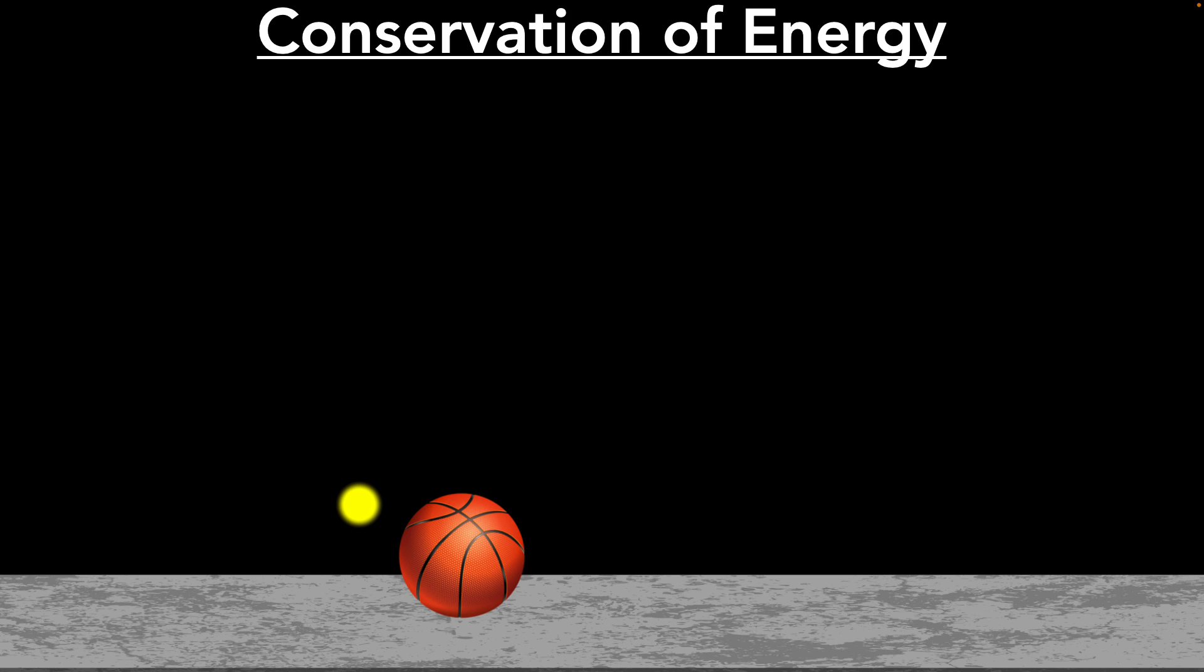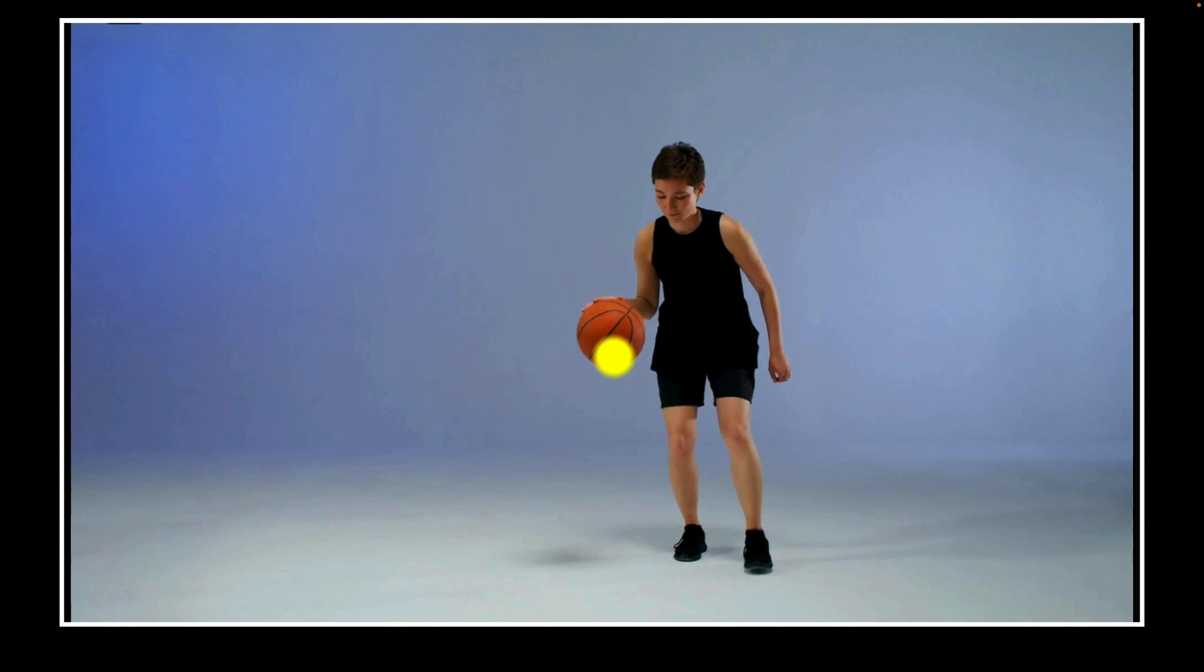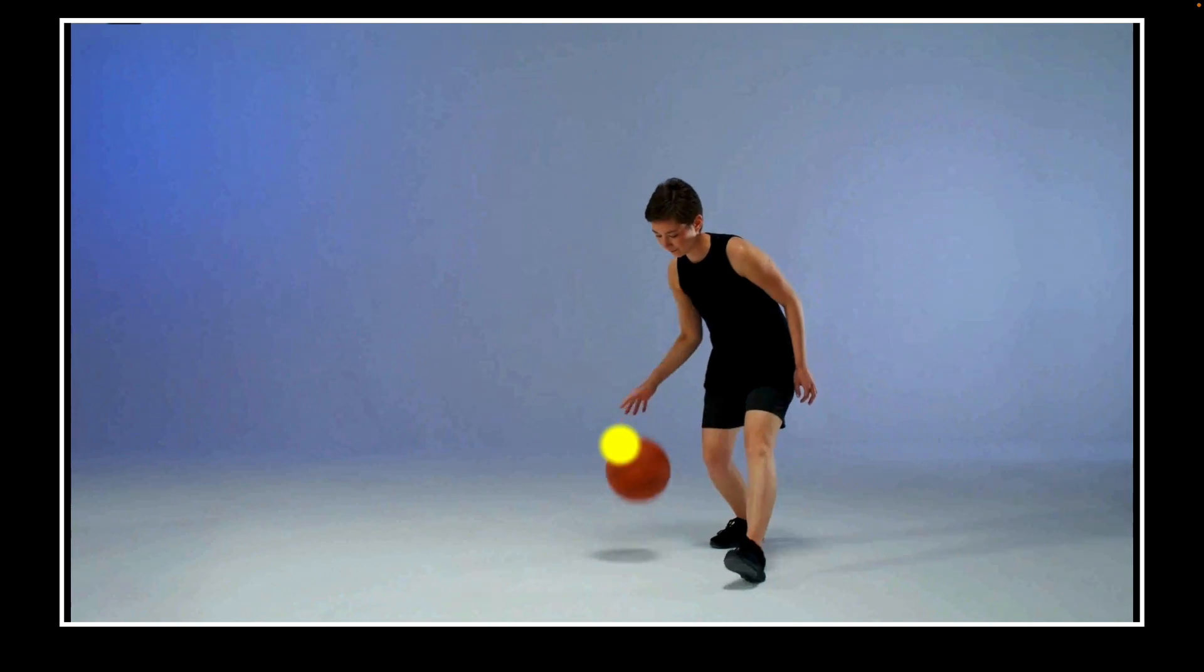So the final question we could be having now is how do we keep this ball bouncing back at the same height? Well, since the energy of the earth ball system keeps escaping, we need to add some energy back in if we want to keep that ball bouncing back to the same height. And that's exactly what happens when you're dribbling a basketball. Every time you dribble, you are pushing the ball, adding energy to the earth ball system from your own body.